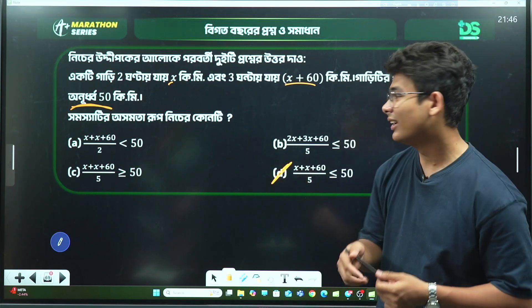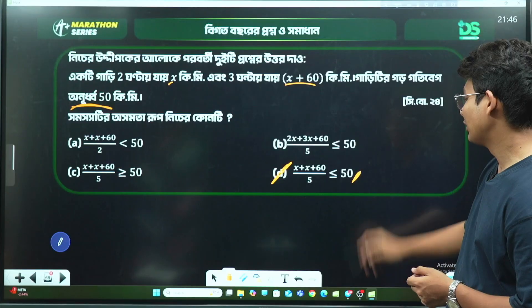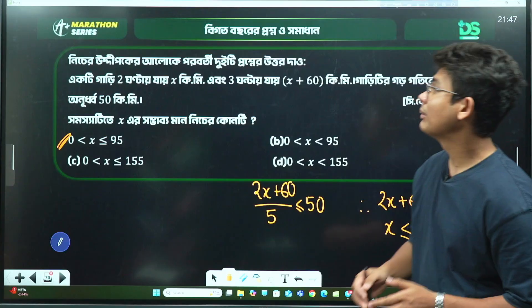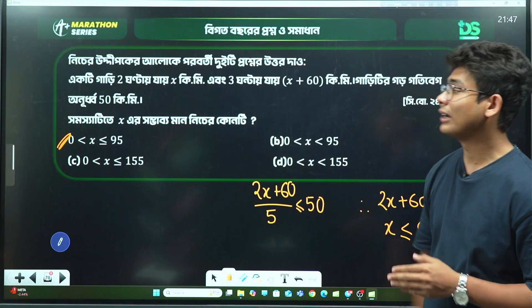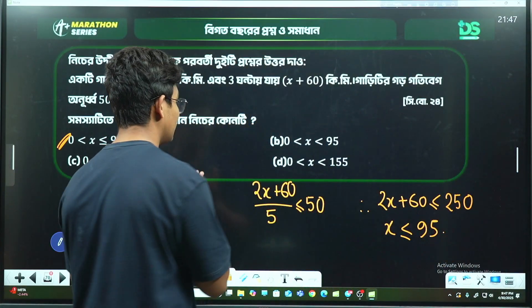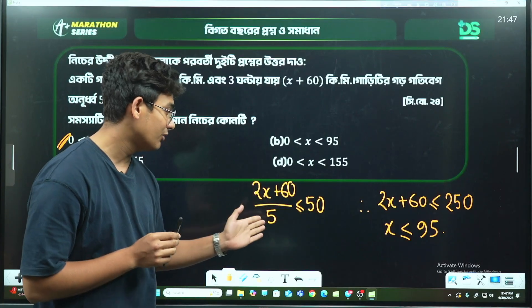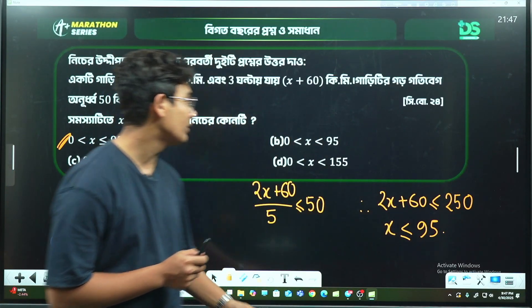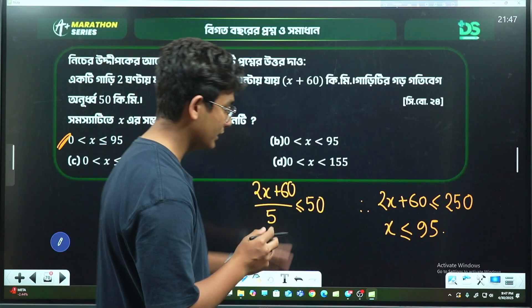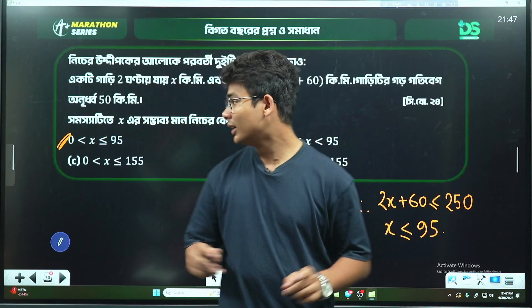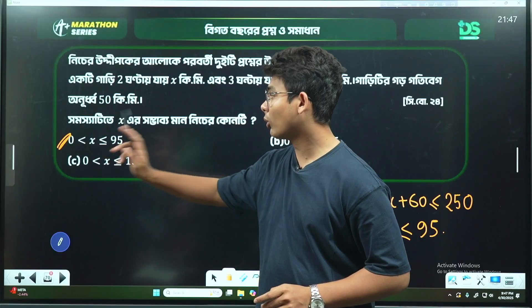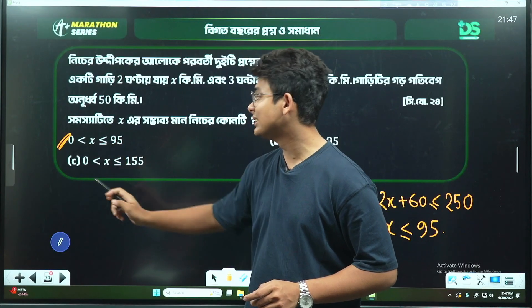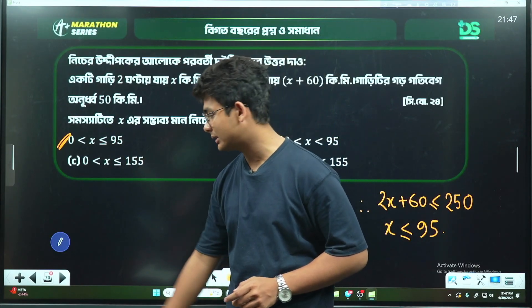Continuing: (2x + 60)/25 ≤ 50. Multiplying both sides: 2x + 60 ≤ 250. So 2x ≤ 190, which means x ≤ 95. The options show 0 to 95, so the answer is 0 < x ≤ 95.